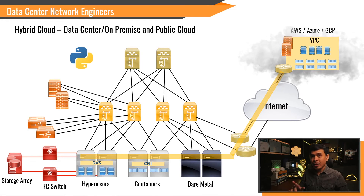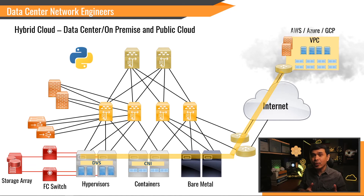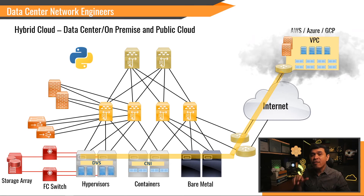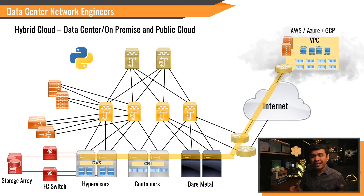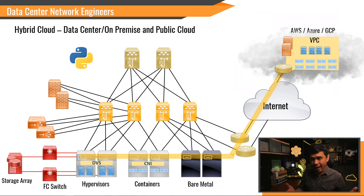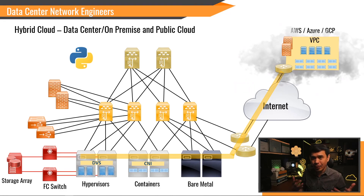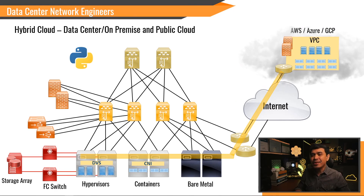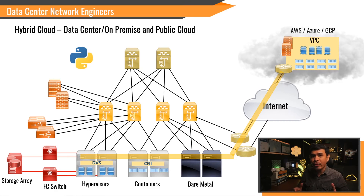Now, here is the question: is there a cloud network engineer position where you only deal with networking in public clouds? Yes, it is possible, but very rare. For small companies, cloud engineers handle everything — containers, network, and security. If you have a more complex network in the cloud, most likely your company has a data center or on-premise network as well, and you will be using hybrid cloud. Data center network engineers and cloud network engineers always cross over in both of their roles.